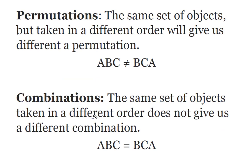In permutations, what we know is that the same set of objects taken in a different order will give us a different permutation. In other words, A, B, and C is not the same as B, C, and A. Think about your PIN number, right? Your PIN number may be 1234, but if you put it in as 4321, they're not going to process your debit card.